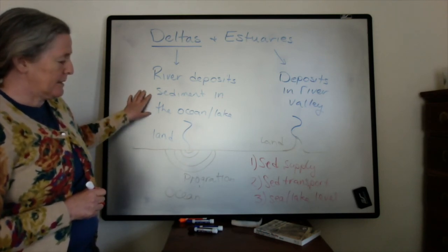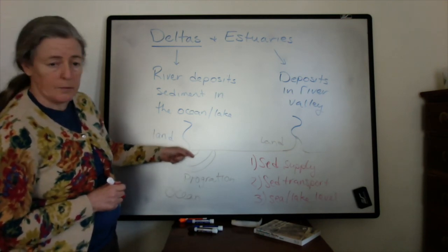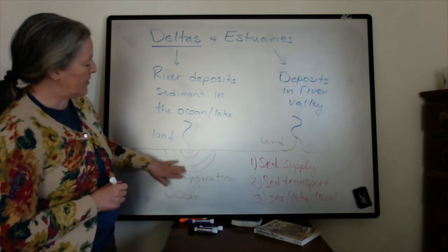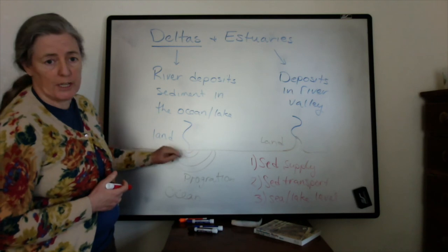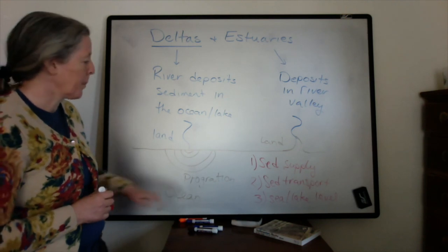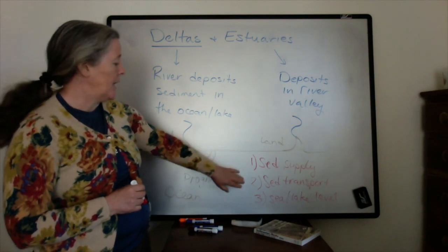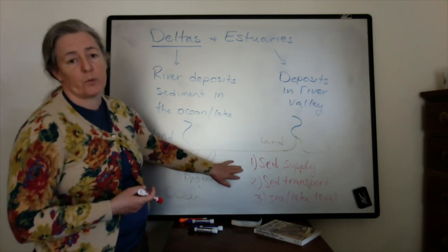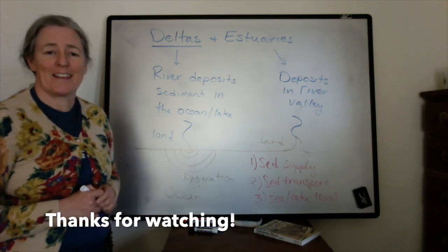Similarly with deltas, if sea or lake level goes down, the sediment will be deposited more and more at the edge of the delta. If sea level goes up, the river may have enough sediment to still maintain its outward building shape, but the depositional environments will change in response to that sea level change. Sediment supply can also change based on climate or tectonic uplift, and sediment transport within the lake or ocean changes with the strength of storms and tides through time.